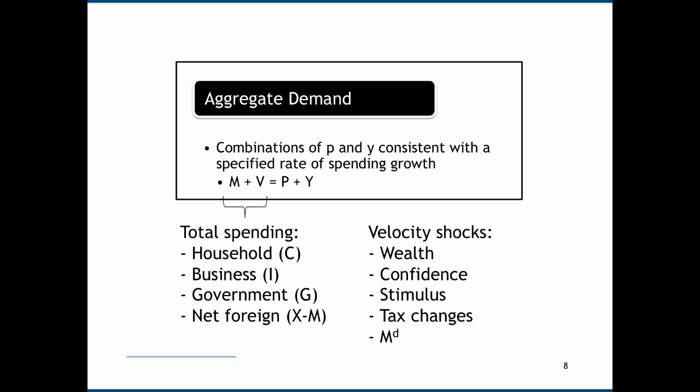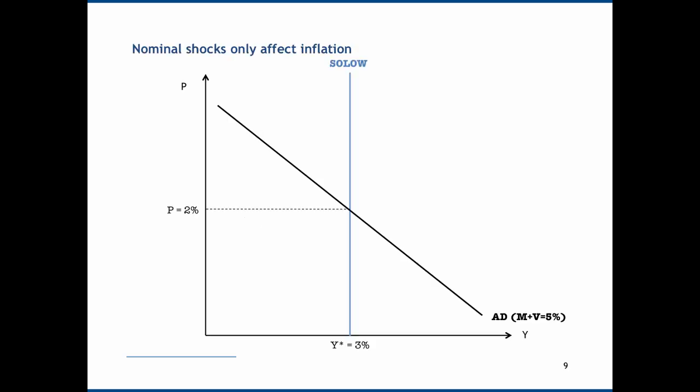To summarise, we can think of velocity shocks generally as referring to confidence: things that boost confidence constitute a positive AD shock, and things that reduce confidence constitute a negative aggregate demand shock. So on the graph, we've got a Solo curve with Y star equals 3%, an aggregate demand curve where M plus V equals 5%, and this implies an inflation rate of 2%. Now let's imagine that the central bank increases the money supply such that M plus V is now equal to 7% — we could also model this as a velocity shock.